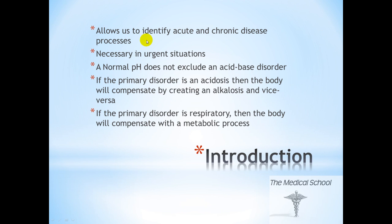Here are a few introductory points. First, acid-base disorders occur in both acute and chronic disease processes. Being able to identify an acid-base disorder will let us identify the process involved. Second, understanding acid-base disorders is necessary in urgent situations, such as when a patient is acutely decompensating. Third, a normal pH does not exclude an acid-base disorder from being present.